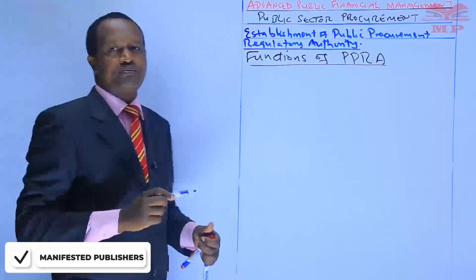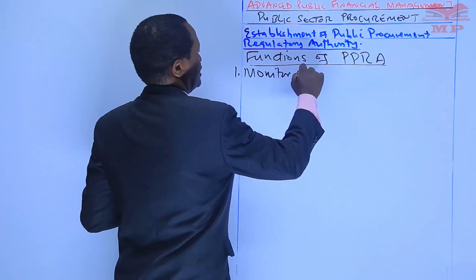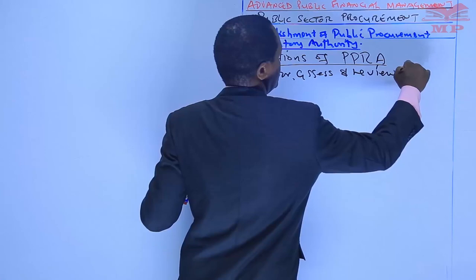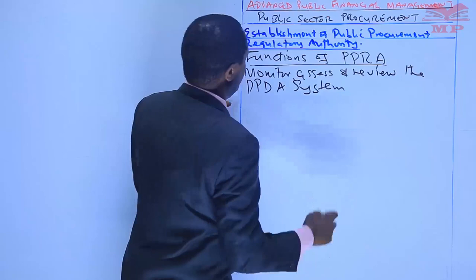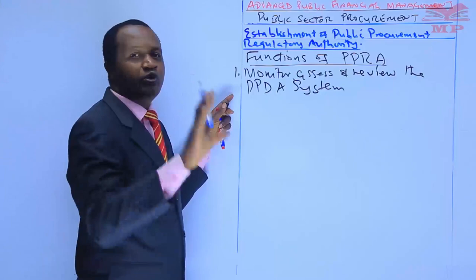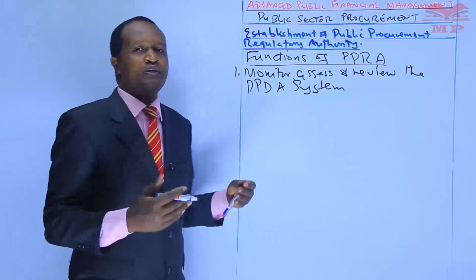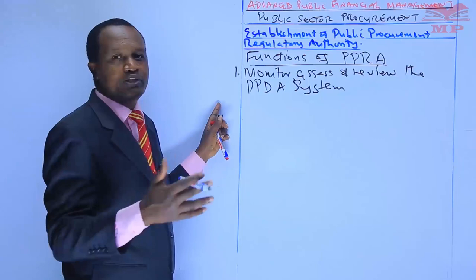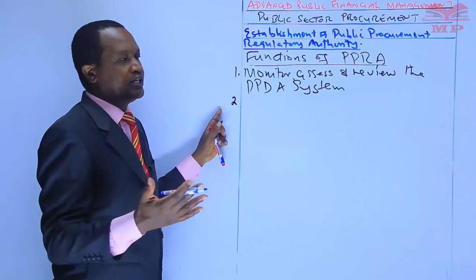The Public Procurement Regulatory Authority — what are its functions? Function number one is to monitor, assess, and review the public procurement and asset disposal system to ensure that they respect the national values and other provisions of the Constitution, including Article 227, and also make recommendations for improvements.